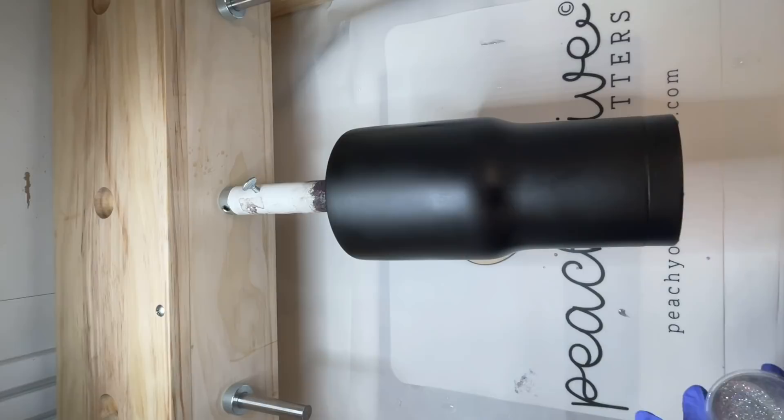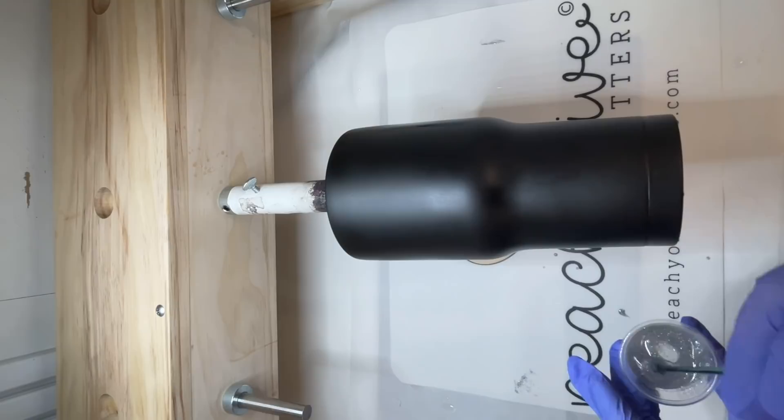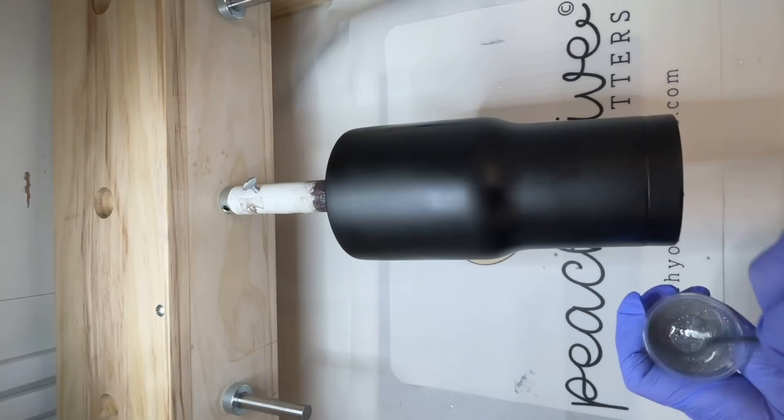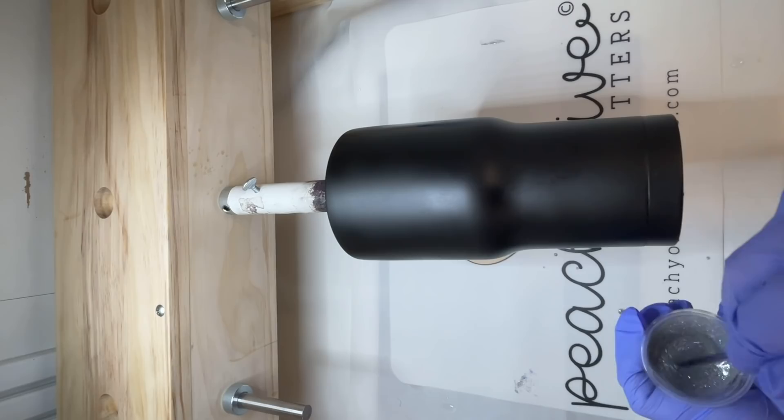I've got about 20 milliliters of epoxy mixed here and I'm going to add a very small amount of this Super NES Fine Silver Holographic Glitter from Peachy Olive Glitters. You definitely want to make sure that it is super, super fine cut.